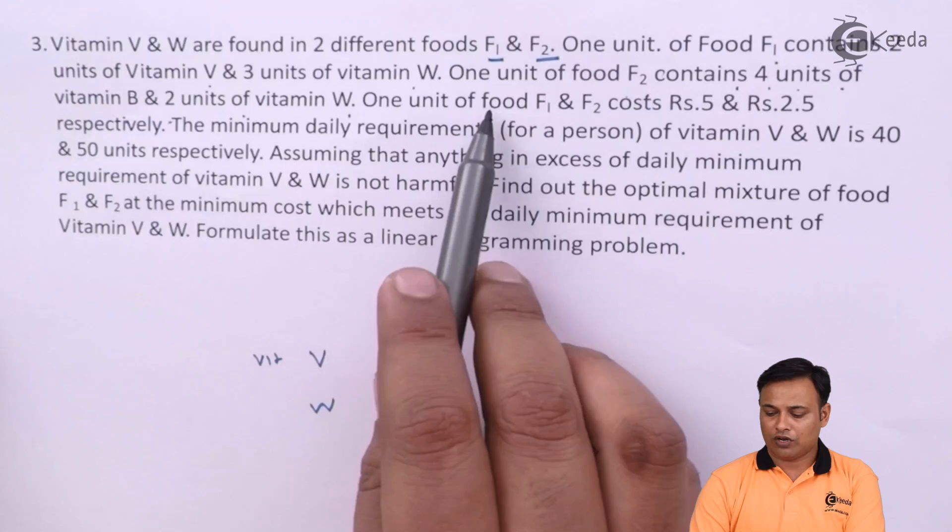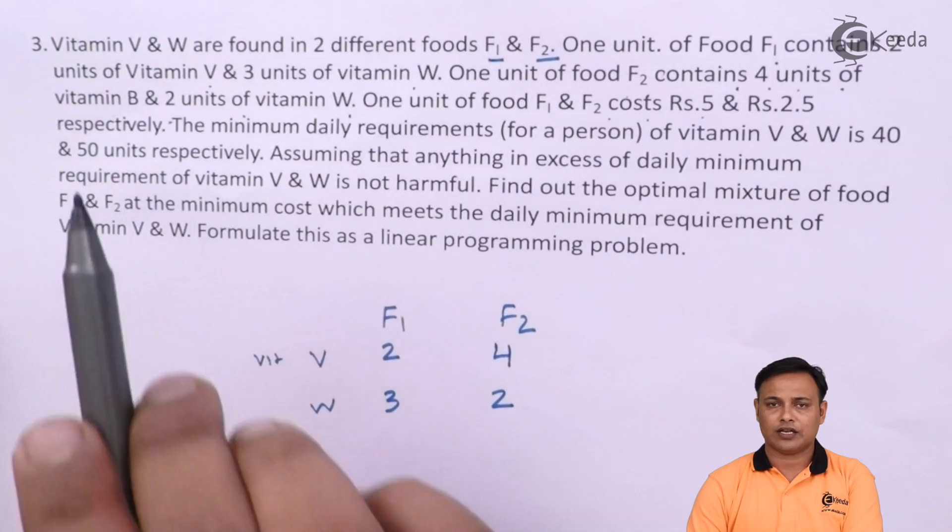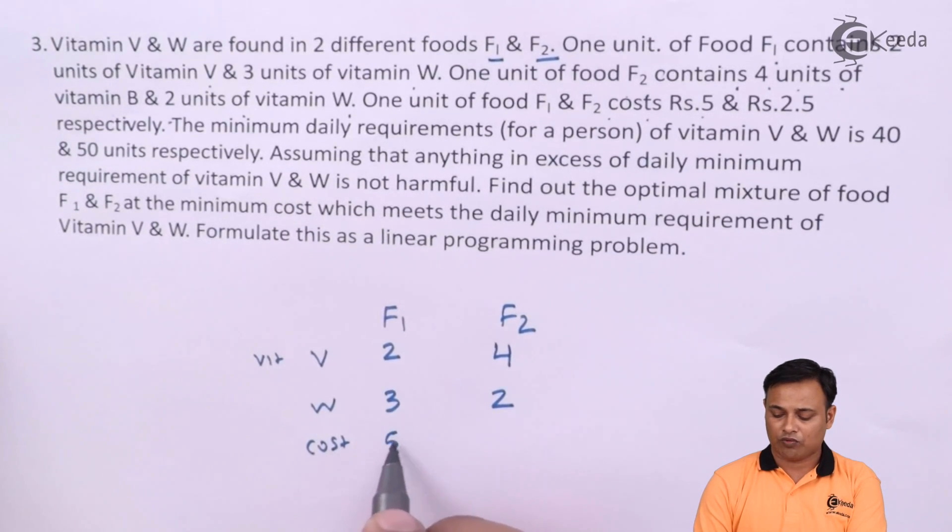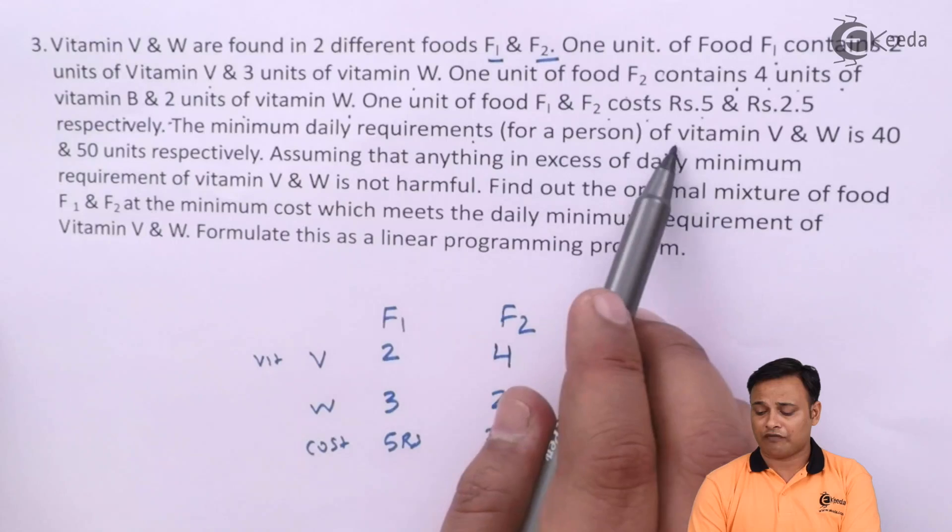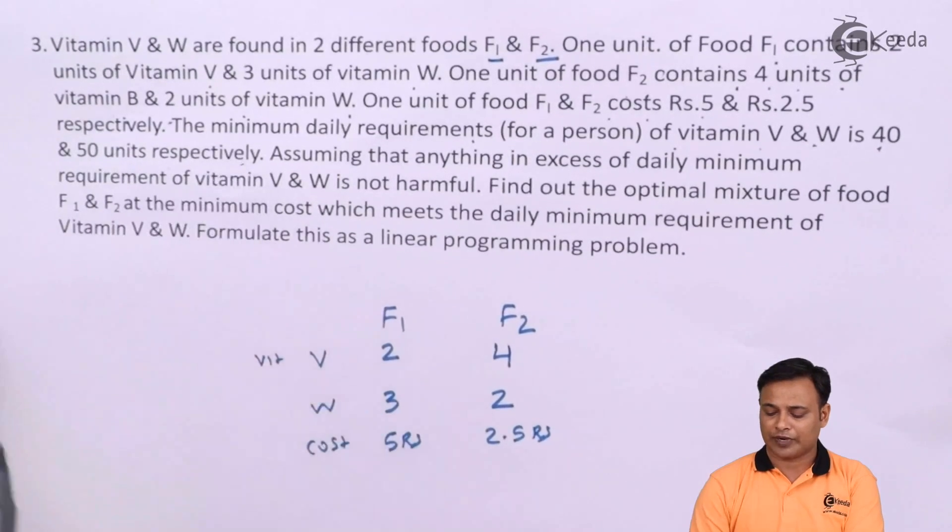1 unit of food F1 and F2 cost 5 and 2.5 respectively. So, what is my cost per unit for food 1? It is 5 rupees and for food 2 it is 2.5 rupees. My minimum daily requirement of Vitamin V and W is 40 and 50 units respectively.